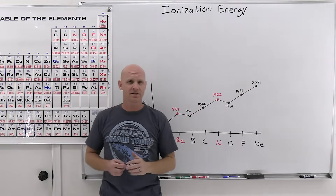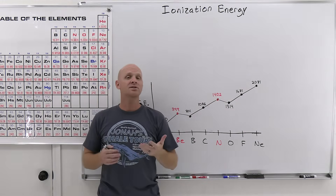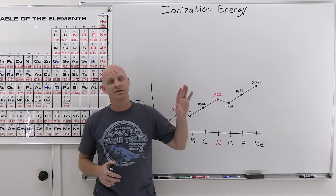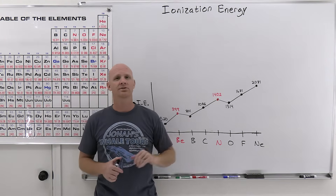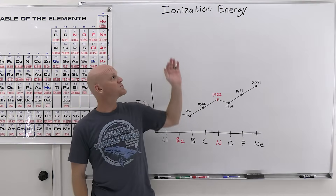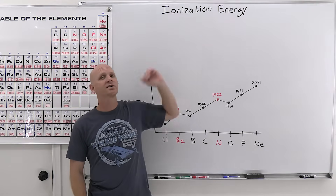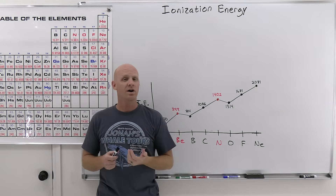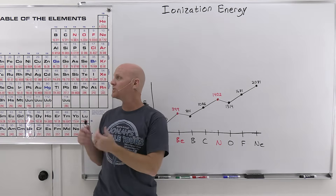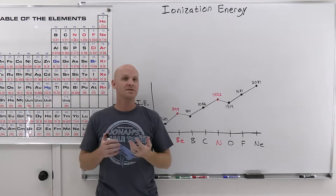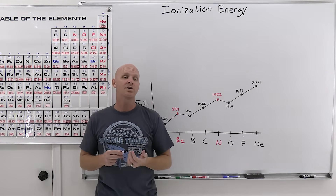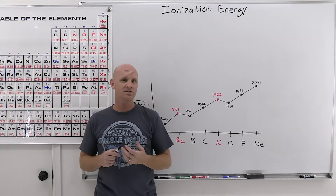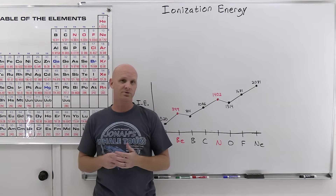Ionization energy is the topic in this lesson, our second periodic trend. We already covered atomic radius. In the next lesson we'll cover electron affinity and electronegativity, but in this one we're covering ionization energy — the energy it takes to remove an electron. We'll talk about the general trend on the periodic table, the exceptions to that general trend, and then successive ionization energies when atoms lose more than one electron.